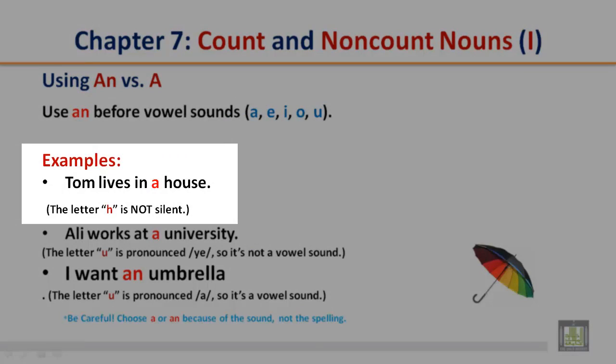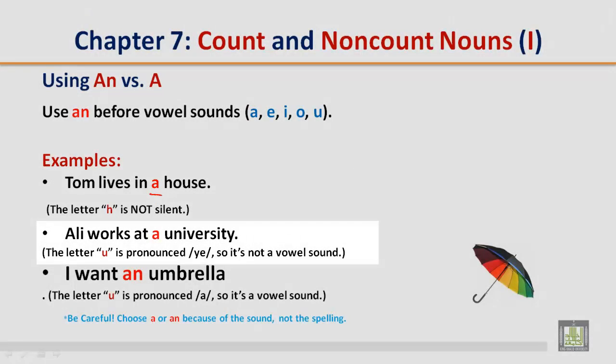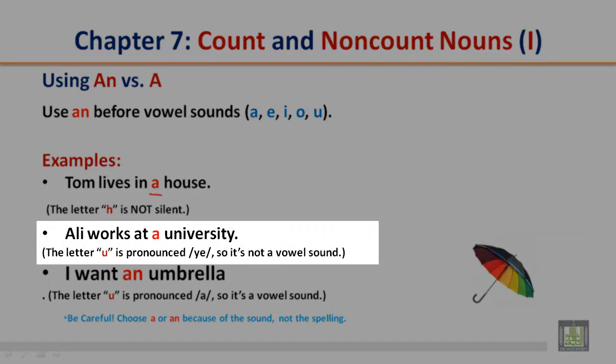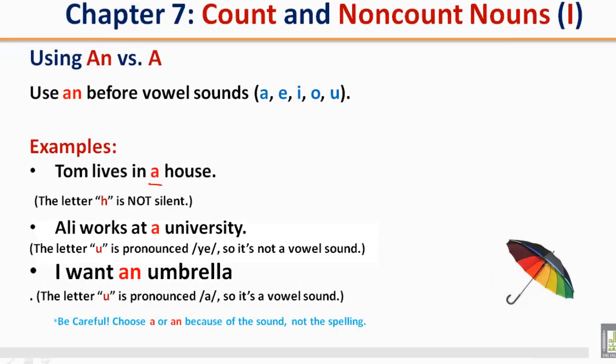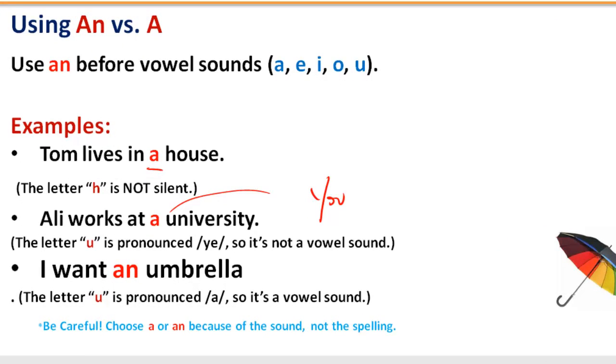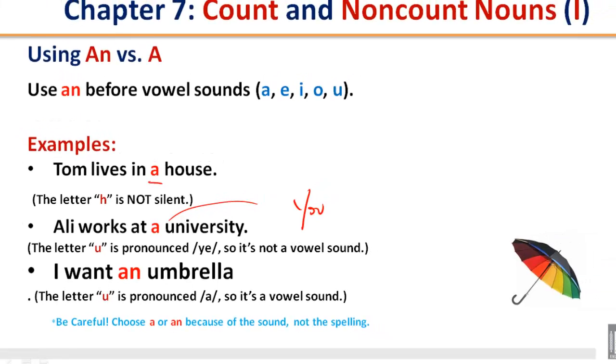Use an before vowel sounds. Examples: Tom lives in a house. The letter H is not silent, so it is a. Ali works at a university. The letter U is pronounced yu, so it is not a vowel sound. This is what it sounds like. You put a before.